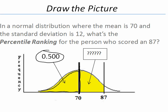To figure out a percentile ranking, all we need to do is figure out the proportion of people between the mean and 87. If we can do that, we'll add up the 0.500 plus the proportion of people between the mean and the value of 87. And that will help us determine our percentile ranking. So the next steps are to figure out this area between the mean and the value of 87.